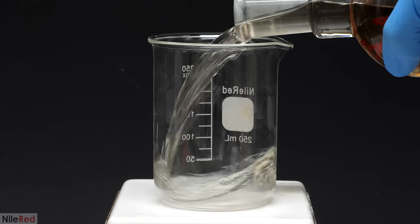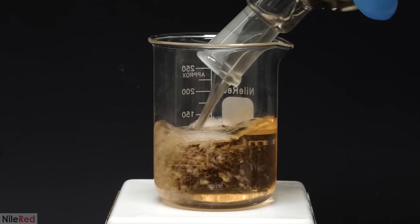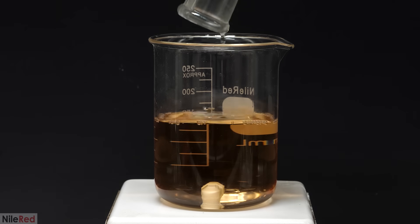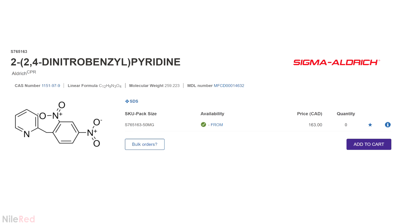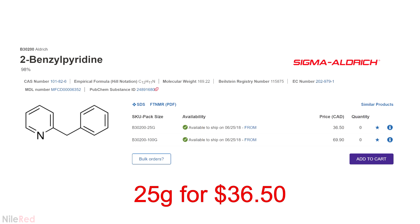For most of my videos, I just make the chemical for fun and to explore the science, but this time, there was another reason. The only chemical company that I can order from is Sigma, and they sell 50 milligrams of DNBP for $163, which is insanely overpriced. Sigma sells its precursor for way cheaper though, so it made a lot more sense for me to just buy that and to make it myself.